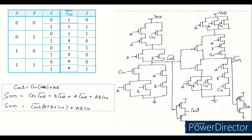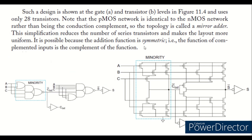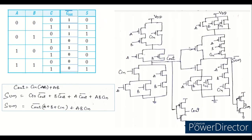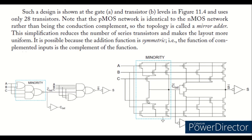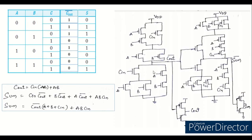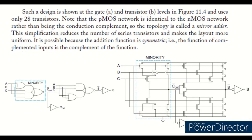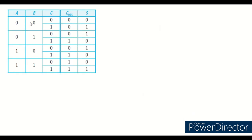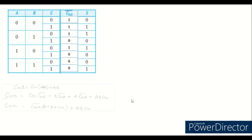This circuit can also be implemented using mirror logic. Since the adder is symmetric, we can apply the mirror technique directly without separately deriving the complementary pull-up. C-in and the A, B parallel combination are mirrored in the pull-up. By this method, the total transistor count is reduced from 32 to 28, achieving a more area-efficient full adder implementation.